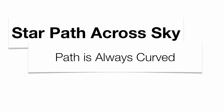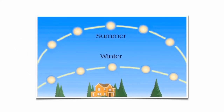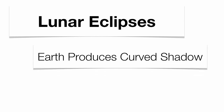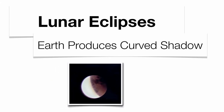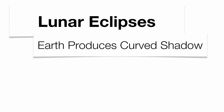The stars' path across the sky, including the Sun, always takes a curved path. If we have a spherical planet, we're going to have curved paths for our stars and our Sun across the sky. You can see the Sun's path in winter and summer — they are not straight, they have a curved nature. The last piece of evidence is lunar eclipses. Anything spherical produces a curved shadow. When the full Moon passes into the Earth's shadow, the curved shadow of the Earth is cast on the lit portion of the Moon, providing evidence that the Earth is spherical in nature.